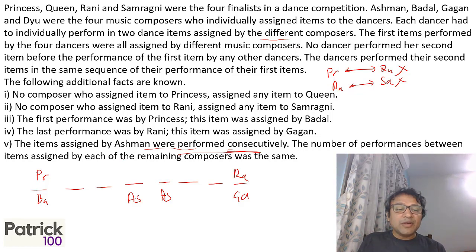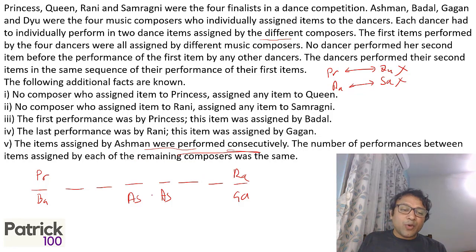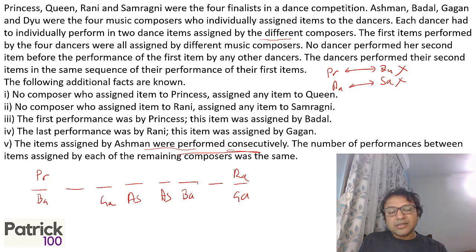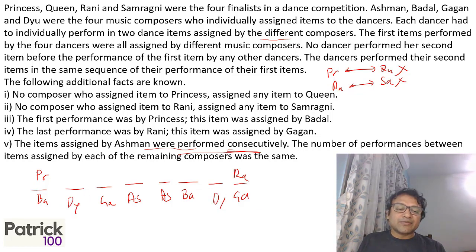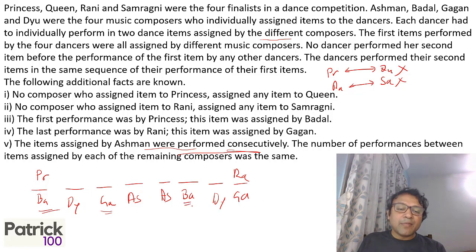They also said the number of performances between the items assigned by each remaining composer is the same. This is only possible if Gagan is third and Bartle is sixth — then the gap between their two performances is equal. The remaining composer, Diyu, fills the balance, which satisfies the condition.